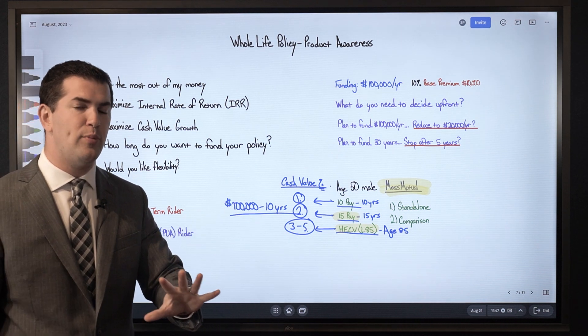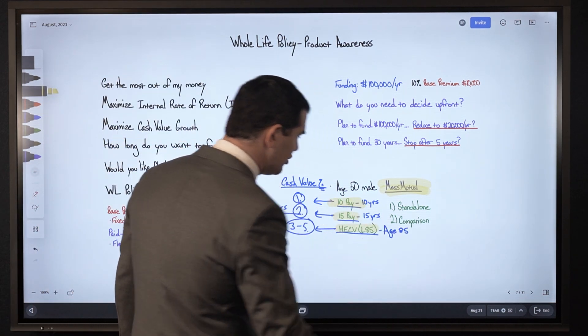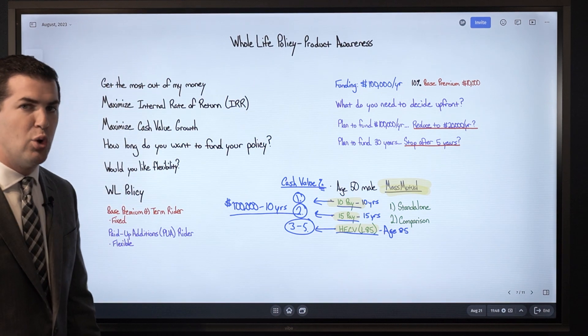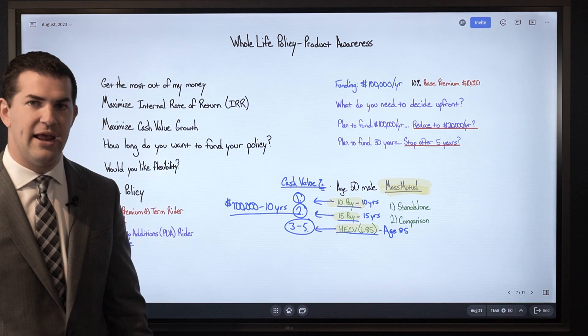and I know that I want to pay into it for 10 years or less, you can design that policy to really be attractive - that 10 pay policy where you've got the strongest growth rate, the most money, and you don't have to fund it for more than 10 years.